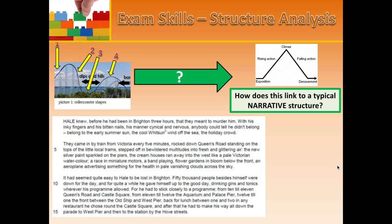So how does this link to a typical narrative structure? A quick overview: exposition is the very beginning of the text — it establishes character and setting. In a novel you'll normally find this in the first couple of chapters, telling you a little bit about the characters and where it's set, basically establishing what to expect.